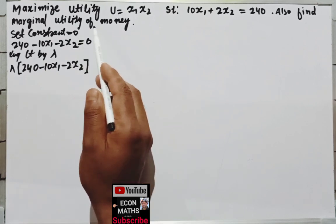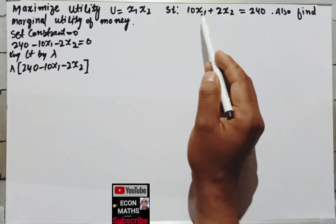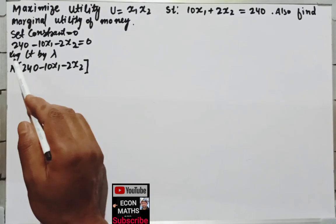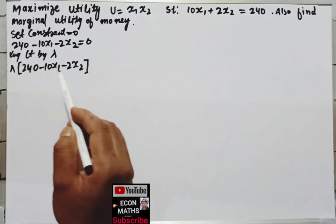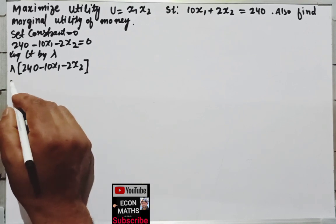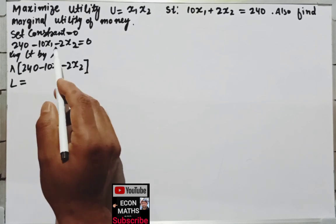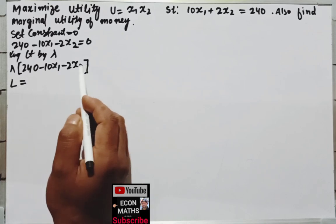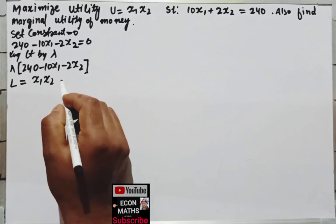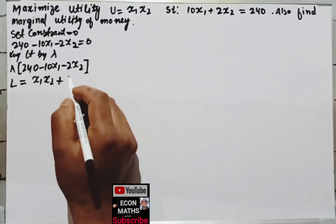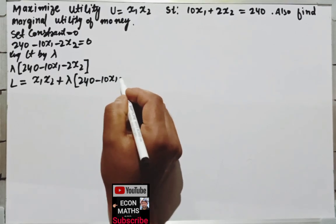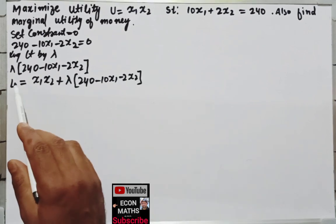First we set the constraint equal to 0 — that is, 240 minus 10x1 minus 2x2. After that we multiply this constraint by lambda. The third step is to form the Lagrange's function by adding the objective function with this constraint. So this will become x1·x2 plus lambda times (240 minus 10x1 minus 2x2). This is our Lagrange's function.